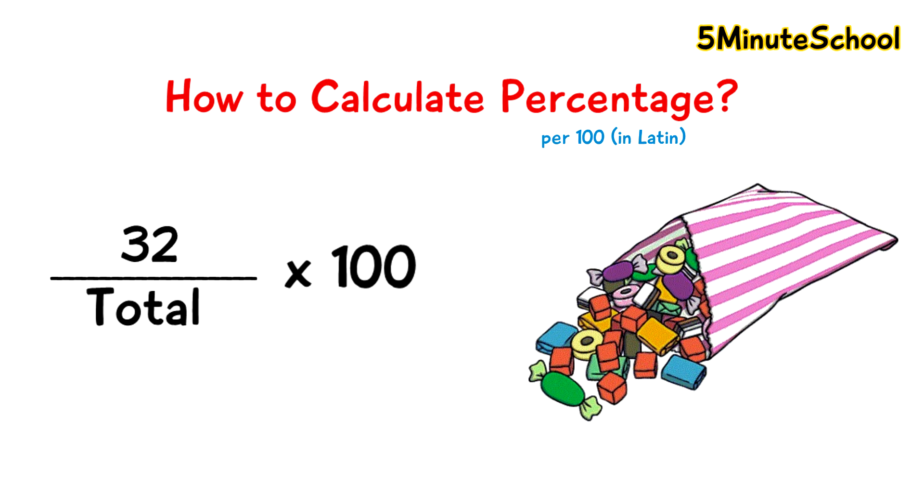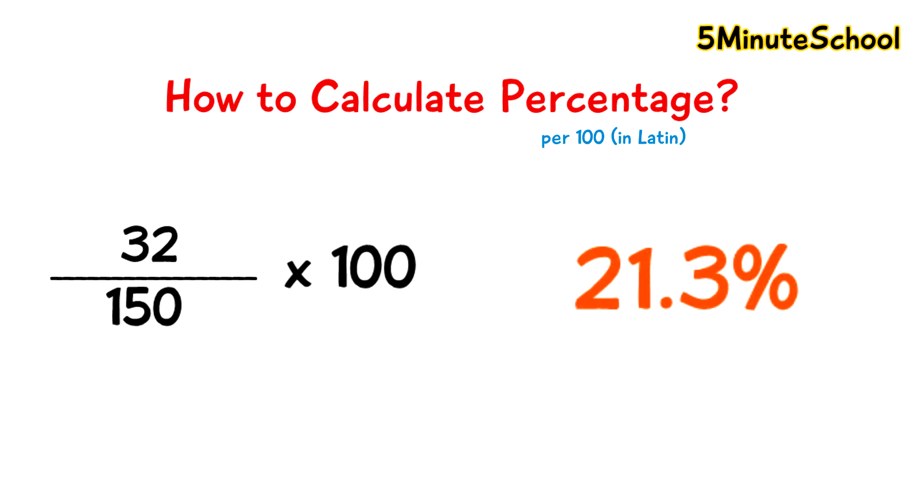So 32 out of a total of 150. You divide 32 by 150 and then multiply this number by 100. That tells you that I took out 21.3% of the sweets from the bag.